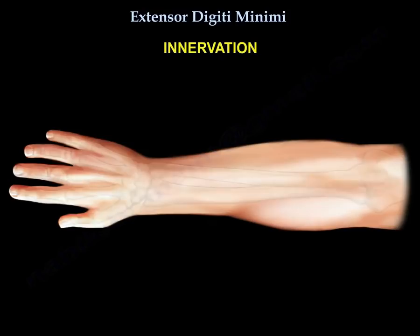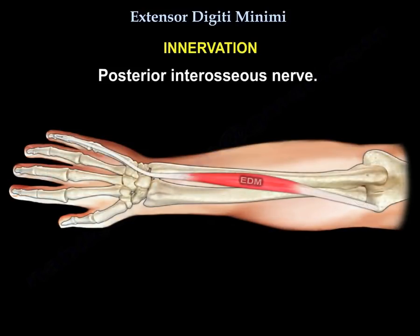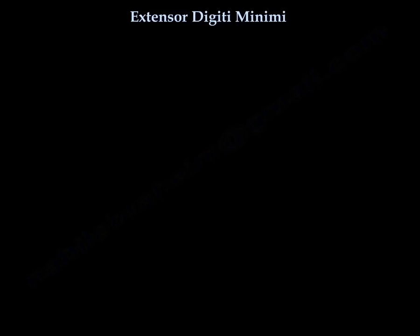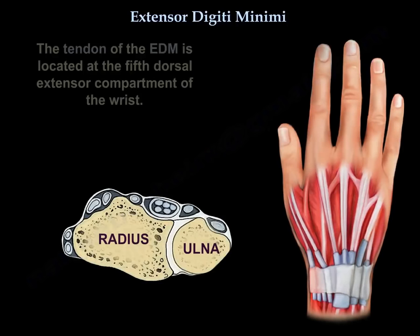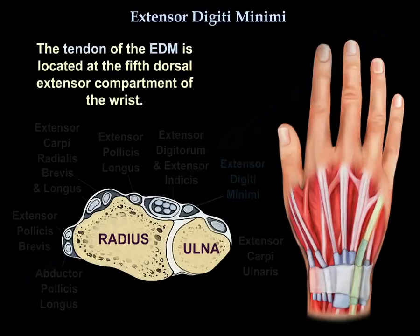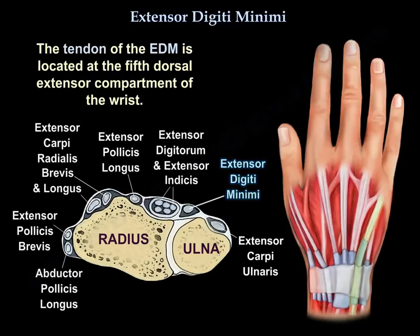Innervation: the posterior interosseous nerve. The tendon of the extensor digiti minimi is located at the fifth dorsal extensor compartment of the wrist.